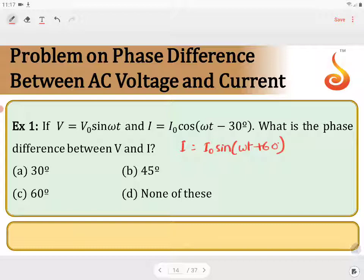So what is the phase difference? What is the phase difference between the current and the voltage? The phase difference between the current and the voltage is 60 degrees.